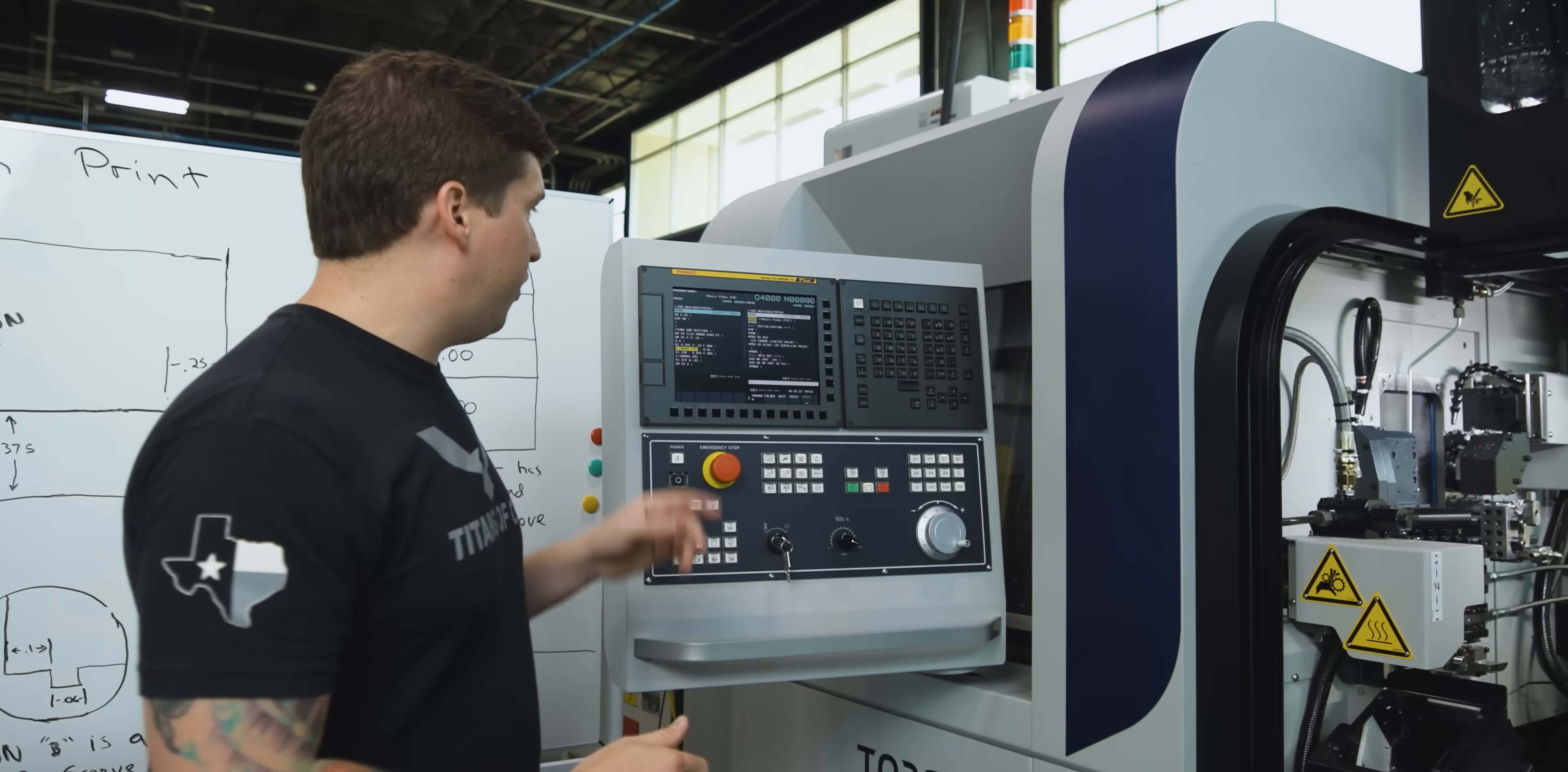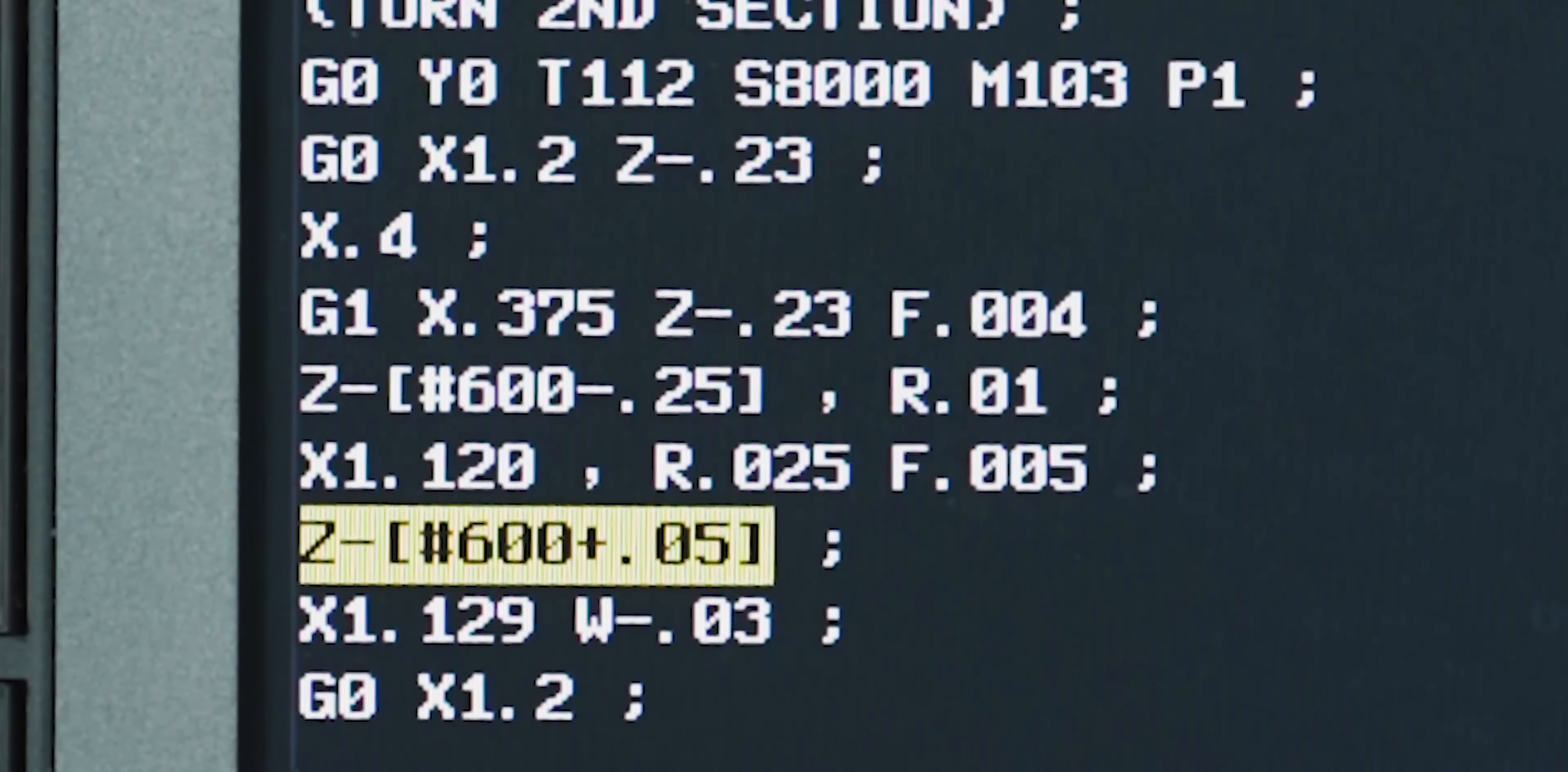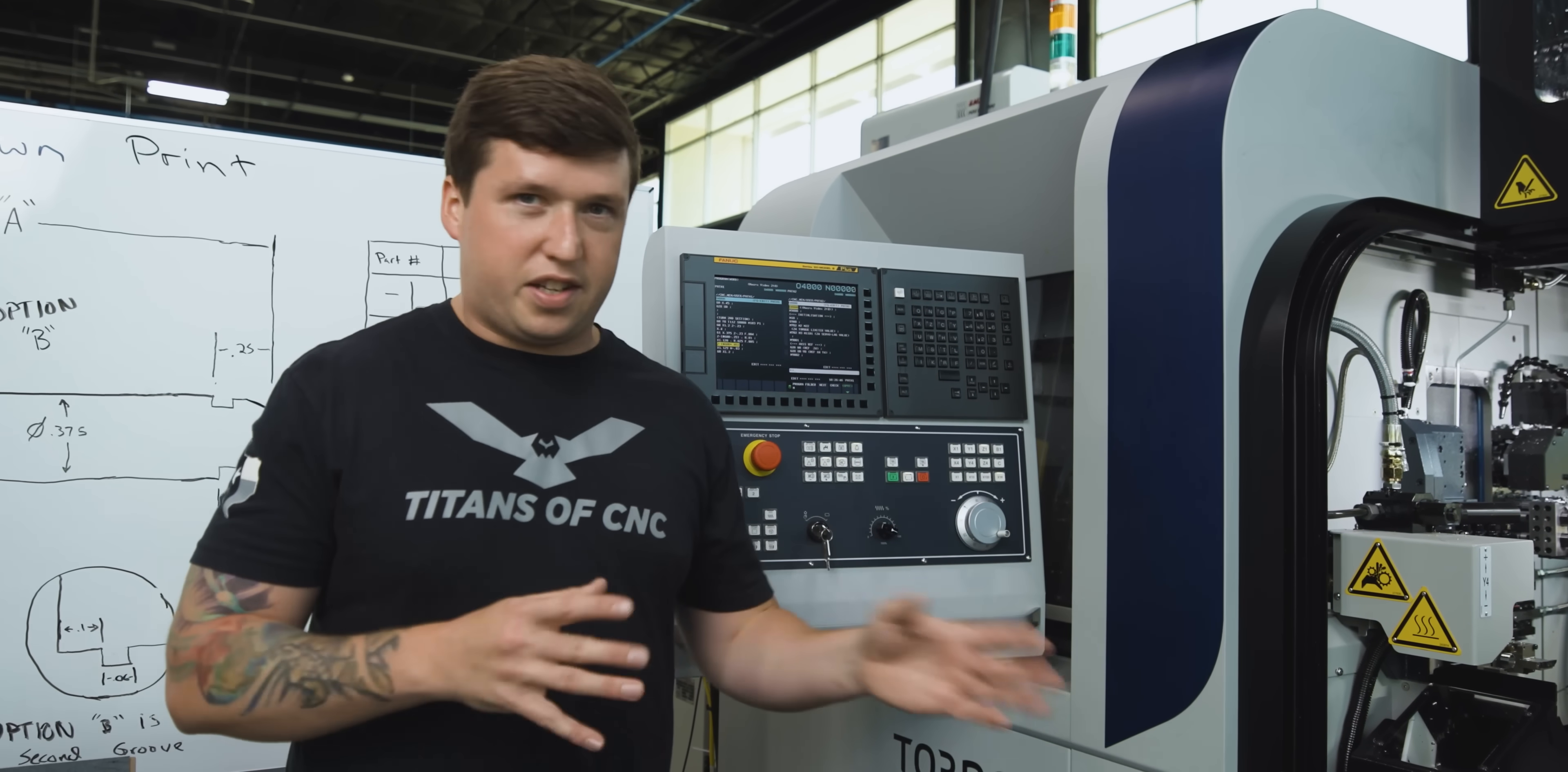That's exactly what I do by putting the math in here. Because I changed it at the top, this is going to update the number it goes to. Then I feed to the OD of the material, then go to Z of my overall length plus 50 thou, again just using pound 600. That's pretty much it as far as the overall length being updated in your program. It's pretty simple how that works.